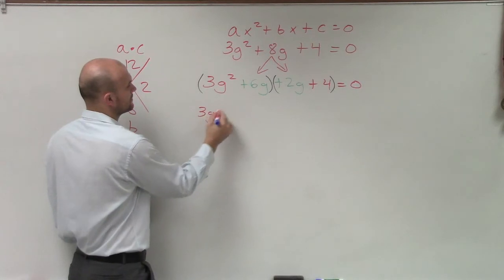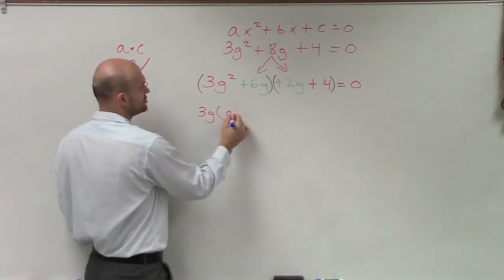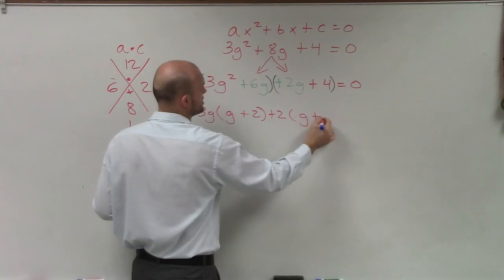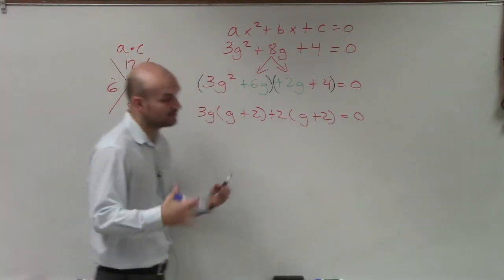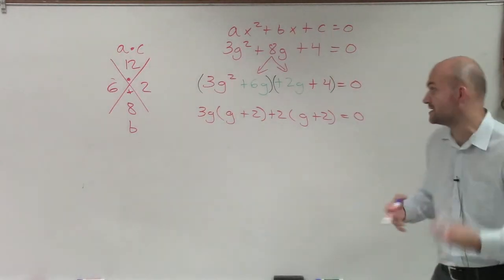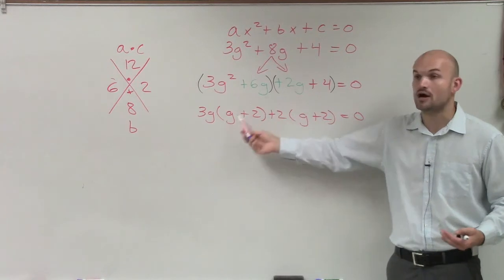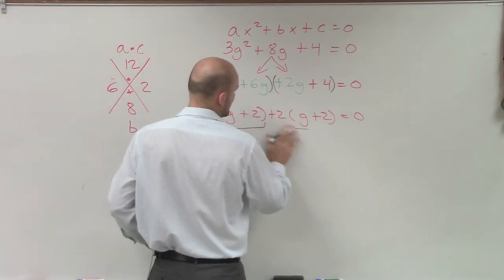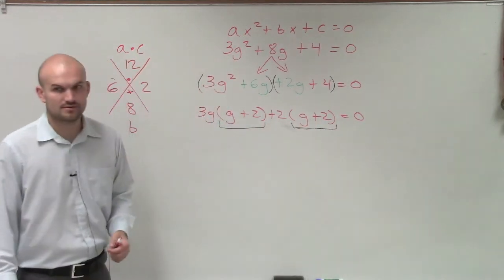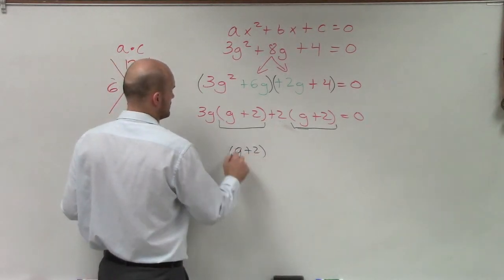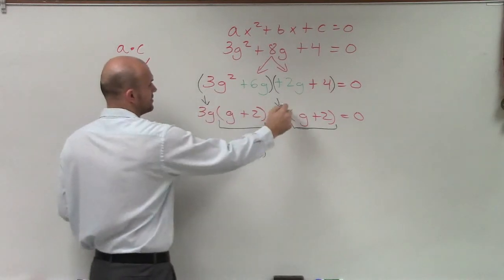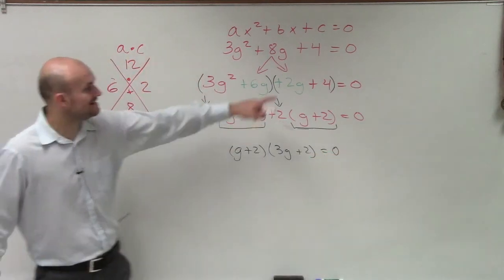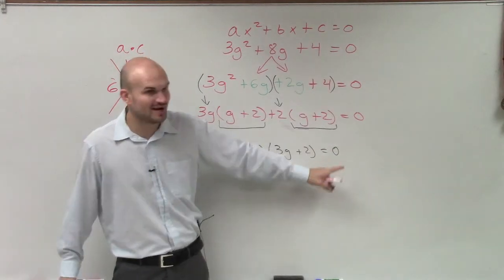What do the first two terms have in common? You can factor out a 3g, and you're left with g plus 2. For the second two terms, you can factor out a 2, and you're left with g plus 2 equals 0. When you're factoring by grouping, you apply the distributive property twice — first factor each pair separately, then ask what they have in common again. They both share the term g plus 2. So factor out the g plus 2, and what's left over is 3g plus 2, and remember this always equals 0.